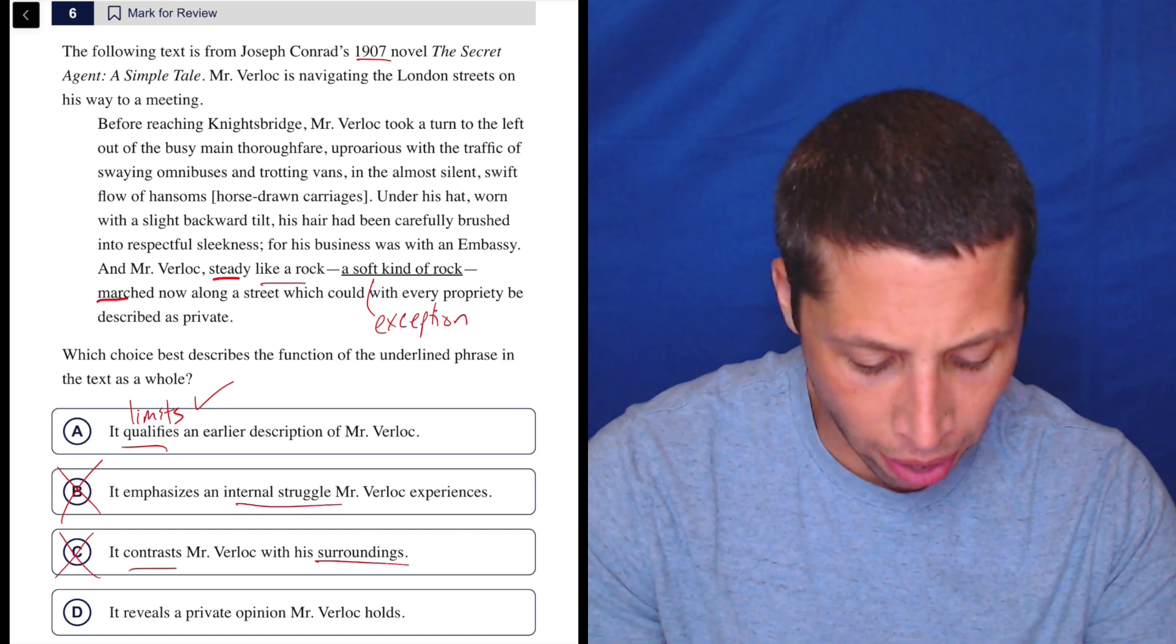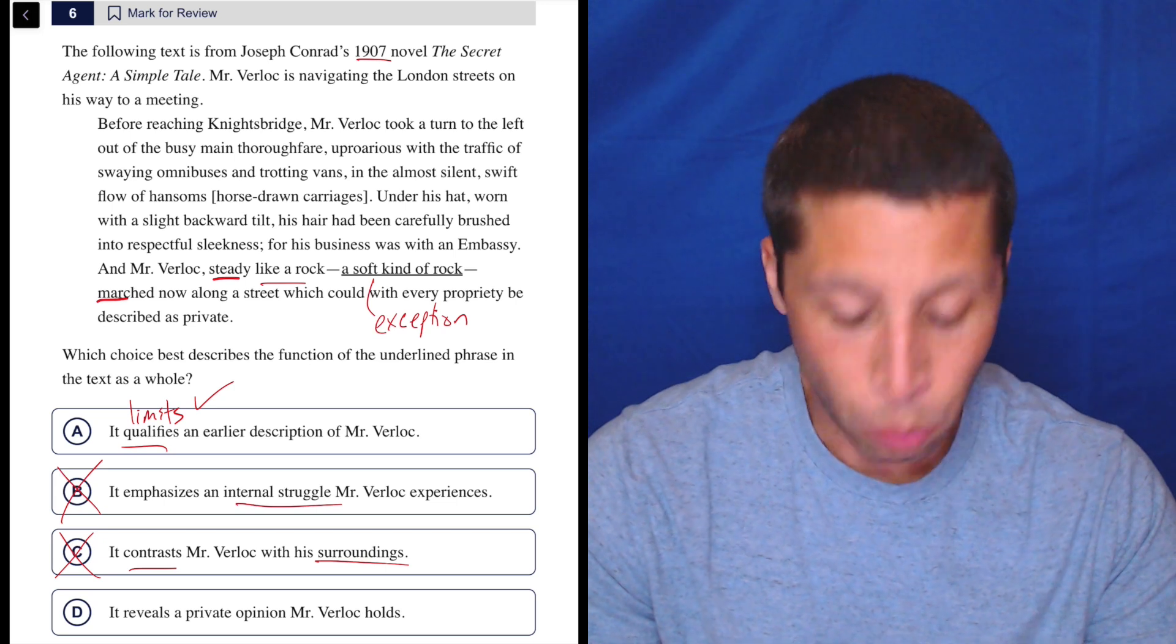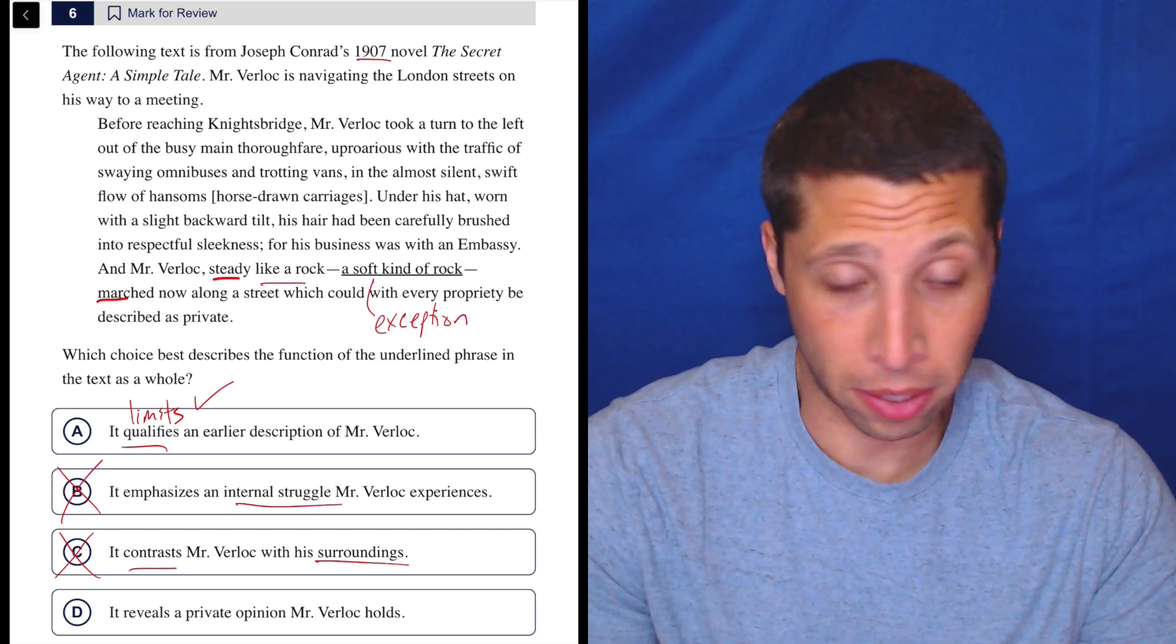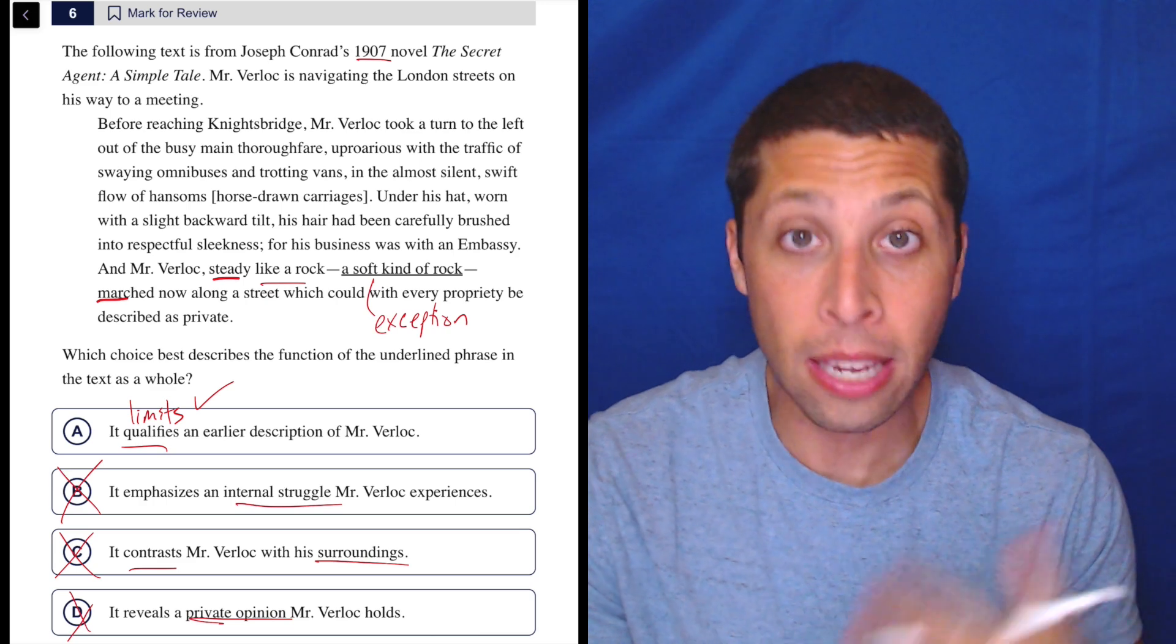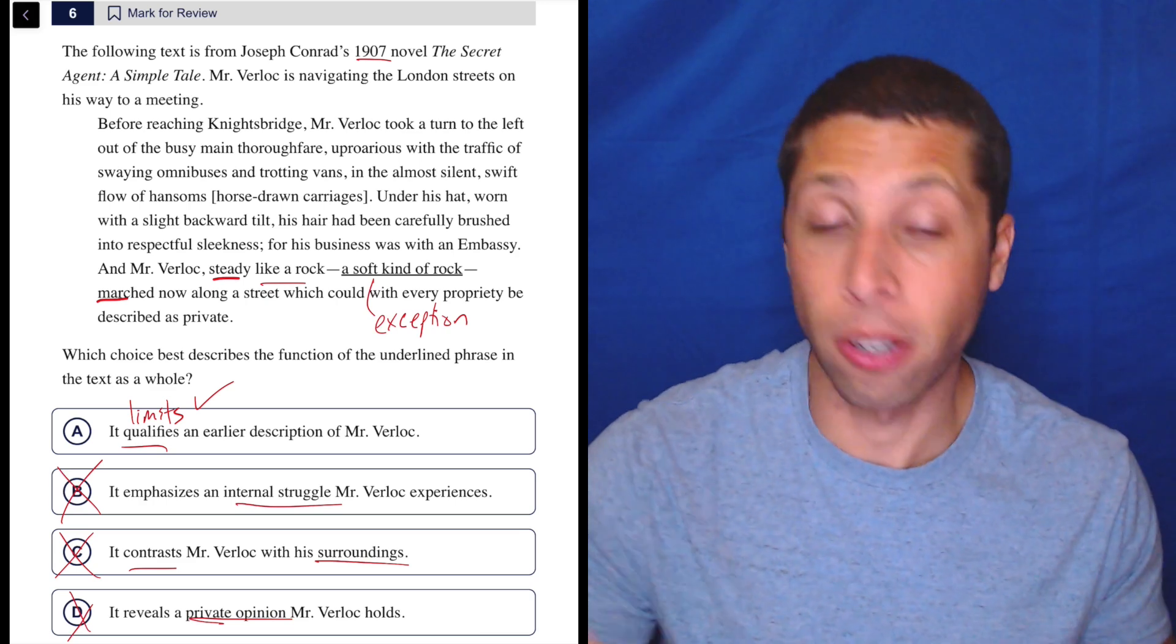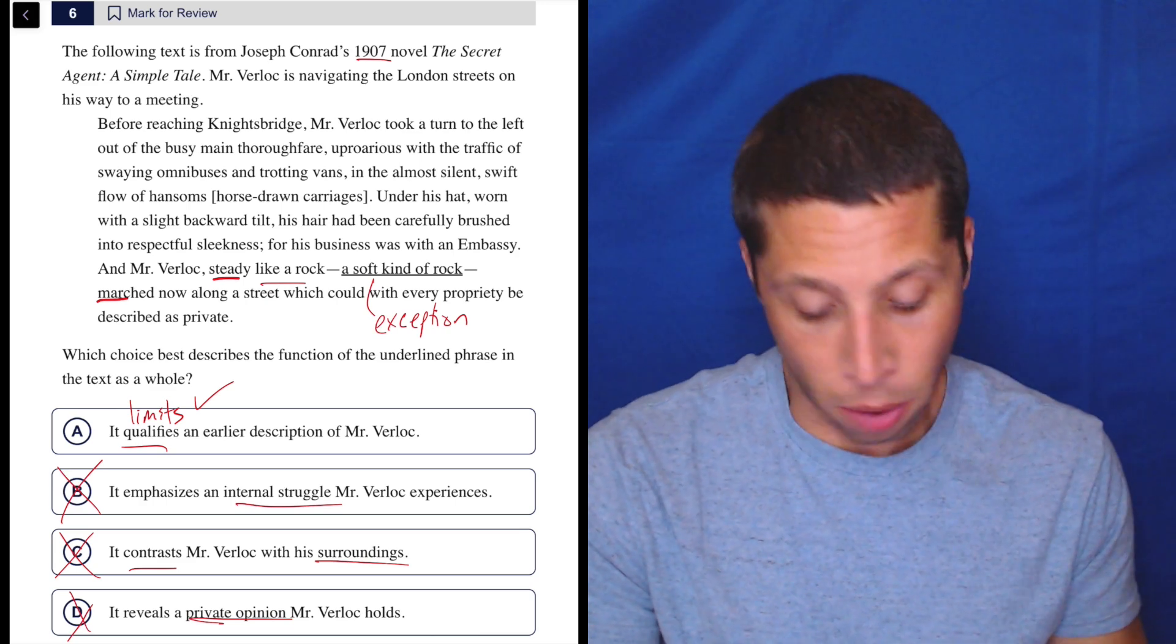And then D, it reveals a private opinion Mr. Verloc holds. Well, it doesn't say this is what he believes. This just seems like the narrator talking. So I don't know that. I don't know what's in his head. It would need to say he felt himself like a soft rock or something like that. So no, that doesn't make any sense.